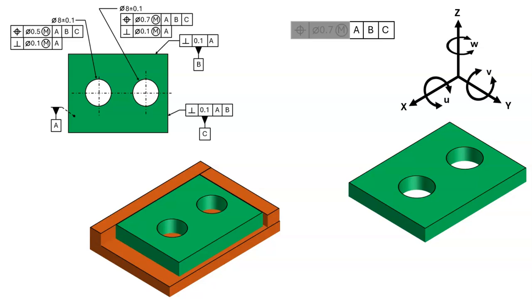Features that are measured relative to A, B, C will be measured from simulated datum A, simulated datum B, and simulated datum C.